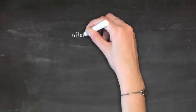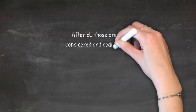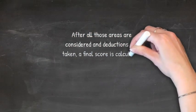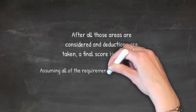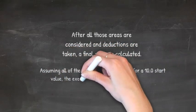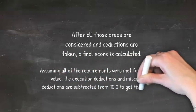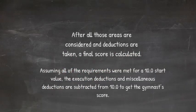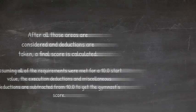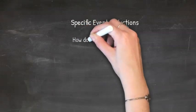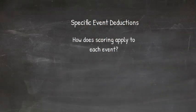After all of those areas are considered, the judges will come up with a final score. The maximum score is a 10.0, assuming the gymnast has met all requirements to bring her base score to a 10.0. That was an overall look at how judges come up with their scores; now let's break it down per event, since there are specific things judges look for on each event.